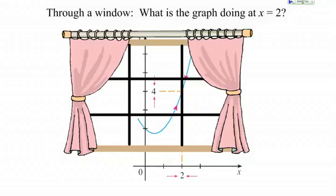We're asked this question: what is happening when X is 2? If we look on the graph right here, we can't actually see when X is 2 — there happens to be a bar over the window right there. But we can make a really good guess. What do you think the Y value is when X is 2?